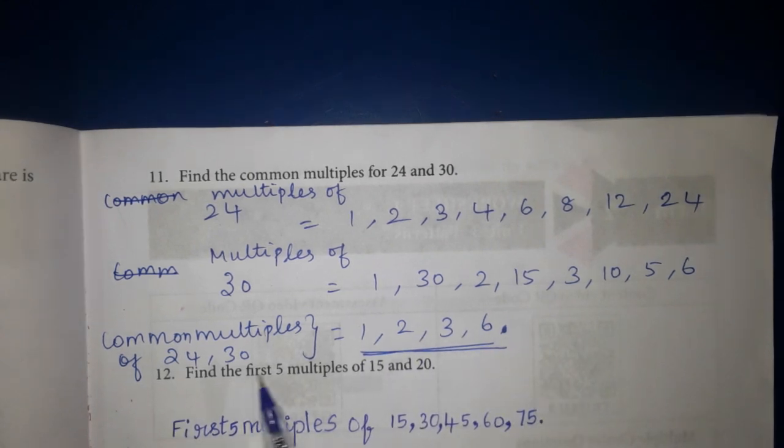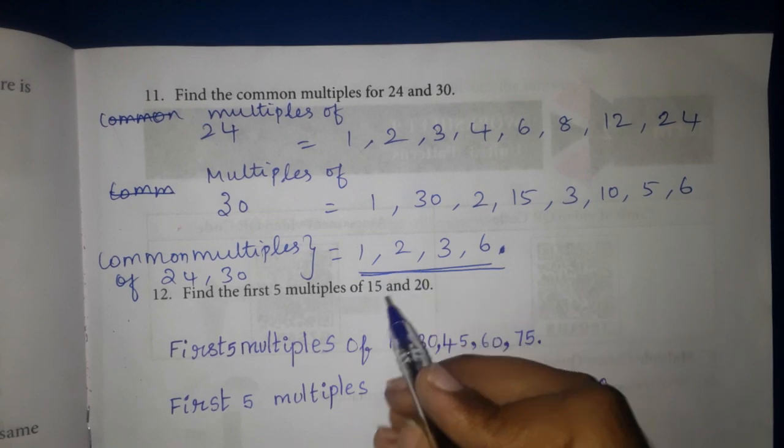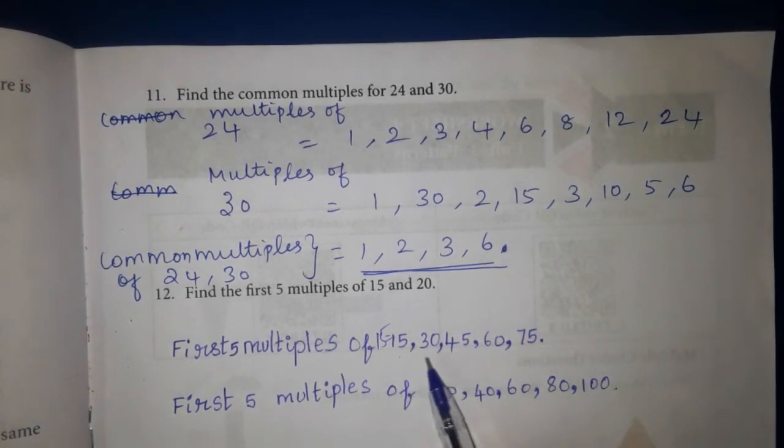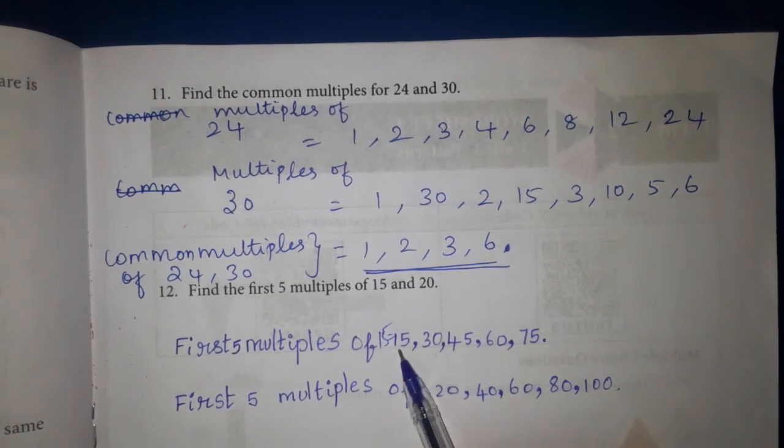12th question, find the first 5 multiples of 15 and 20. First 5 multiples of 15 is equal to 15, 30, 45, 60, 75.